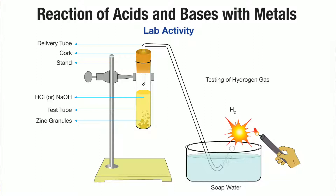For the procedure, we have to fix the test tube. After that, we have to insert the delivery tube through the stopper in the test tube. The other end of the delivery tube should be fixed into another test tube which contains soap solution. This is the required material setup and alignment.